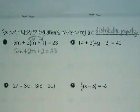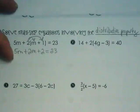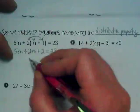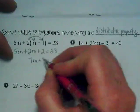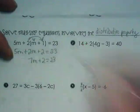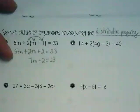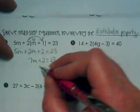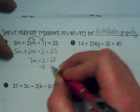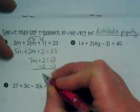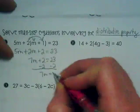And then we combine like terms. 5m and 2m becomes 7m, plus 2 equals 23. Our next like terms are on opposite sides of the equal sign, so we're going to do minus 2 to move it to the other side.